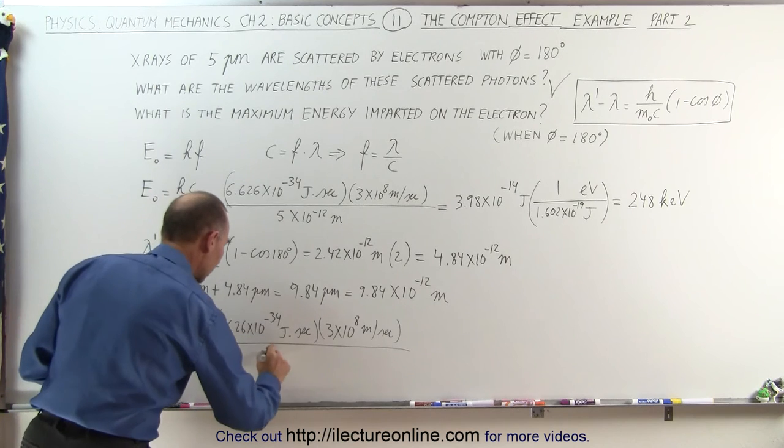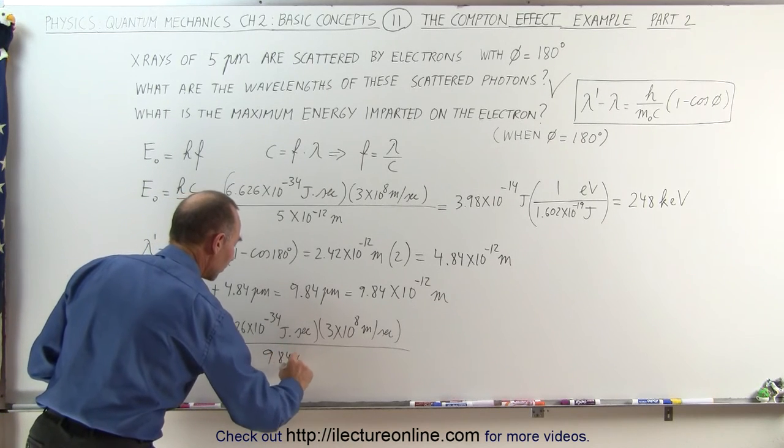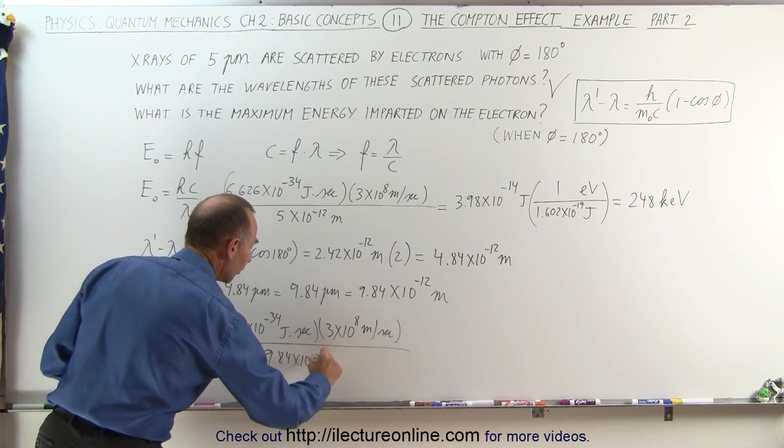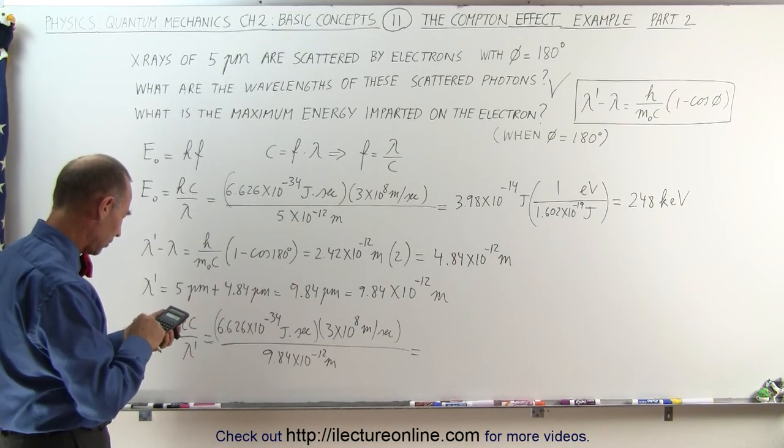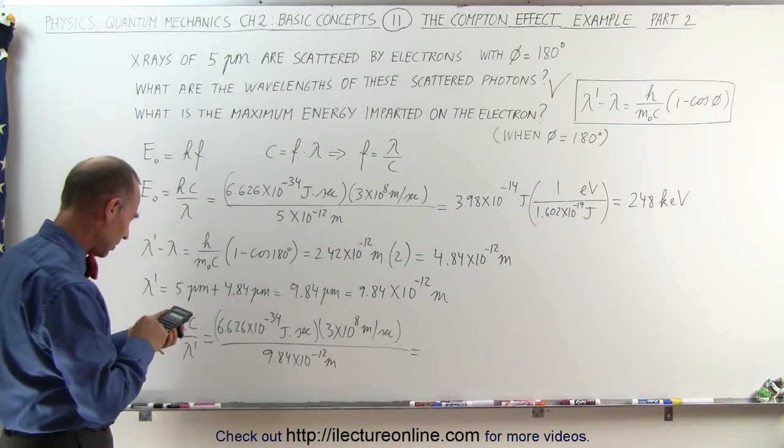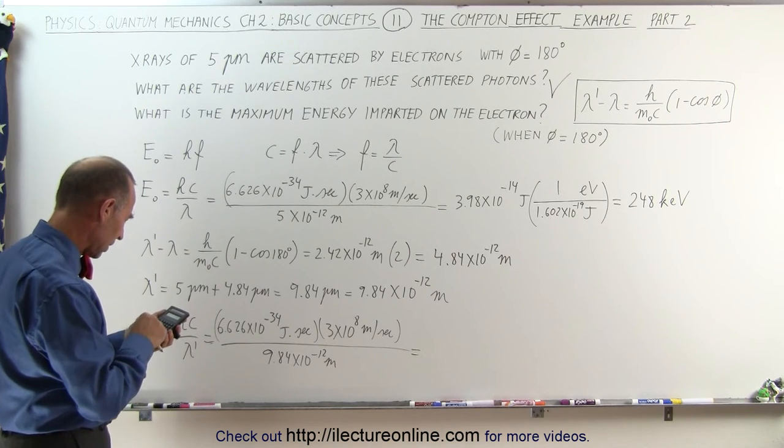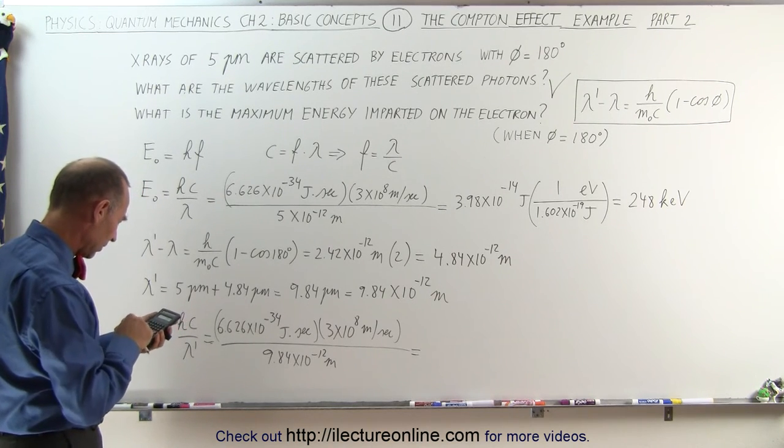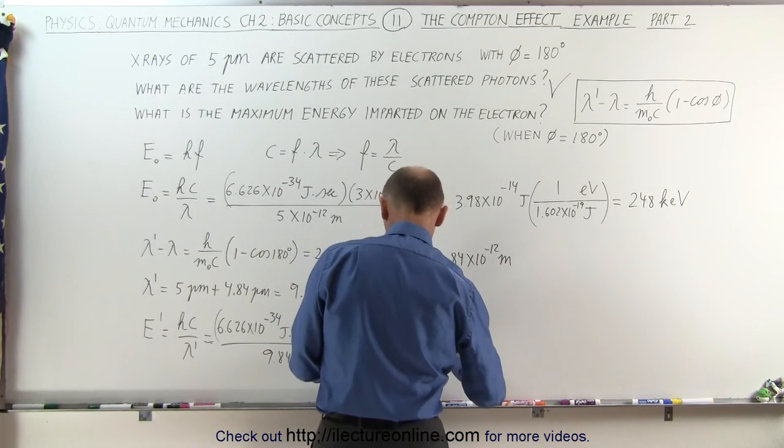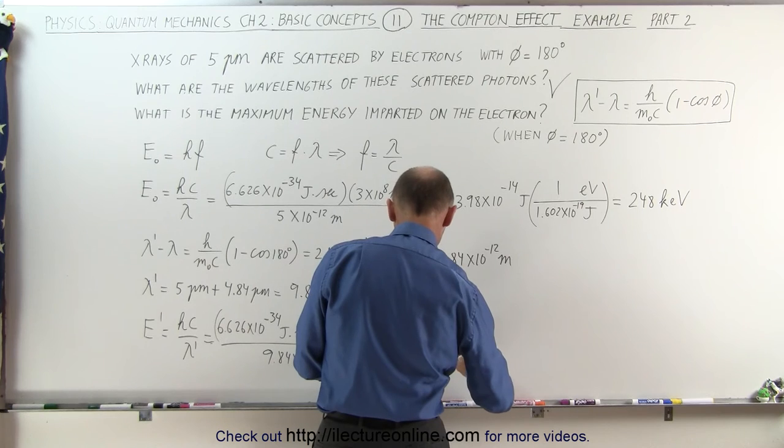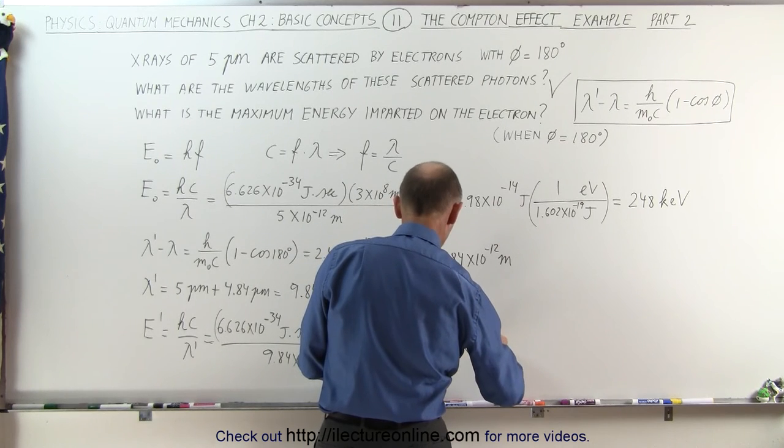6.626E-34 times 3E8 divided by 9.84E-12 equals, and that would be equal to 2.02 times 10 to the minus 14 joules.